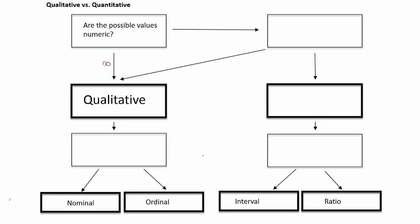Going back to the top, our first question is: are the possible values numeric? If we answer yes, we move straight across to the next question box, which has a lightweight line. Here we ask ourselves: do the numbers have units? Things like milliliters, kilograms, or centimeters. Time is sometimes tricky because we don't think of it as having units, but it actually does — hours, a.m. or p.m., or military time such as 1,300 hours for 1 p.m.